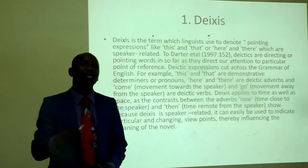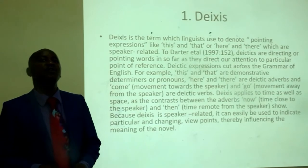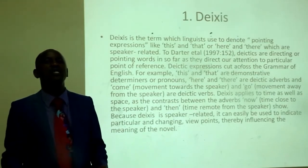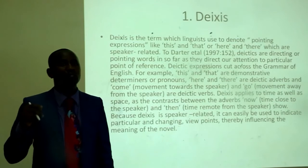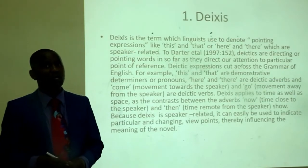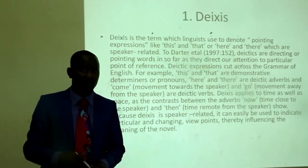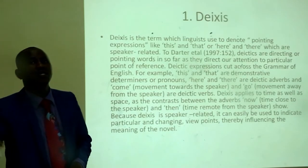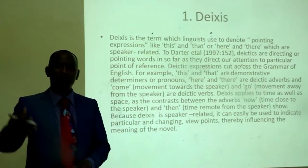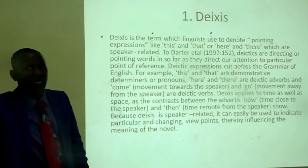According to Dr. Eta Lee, 1997, page 152, deictics are directing or pointing words insofar as they direct our attention to a particular point of reference. Deictic expressions cut across the grammar of English. For example, 'this' and 'that' are demonstrative determinants or pronouns. 'Here' and 'there' are deictic adverbs, and 'come' — that is movement towards the speaker — and 'go' — that is movement away from the speaker — are deictic verbs.